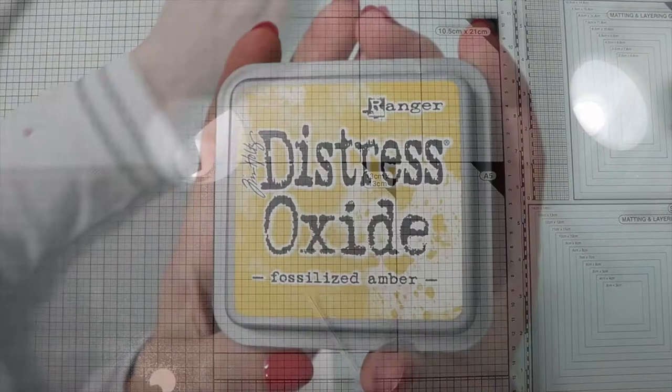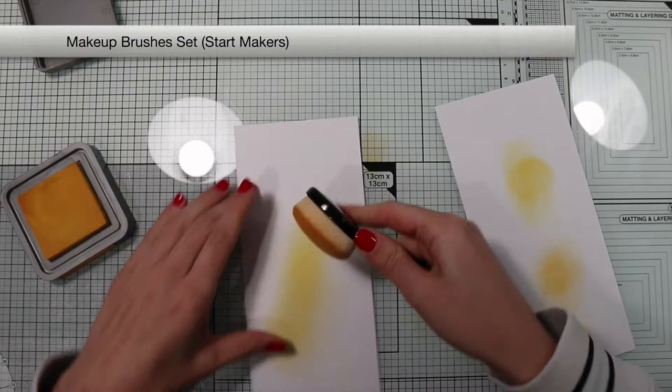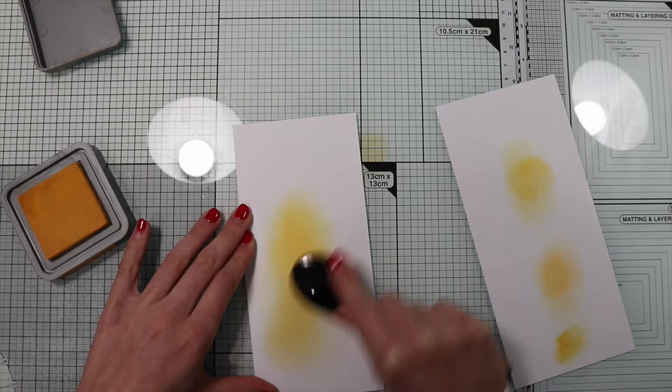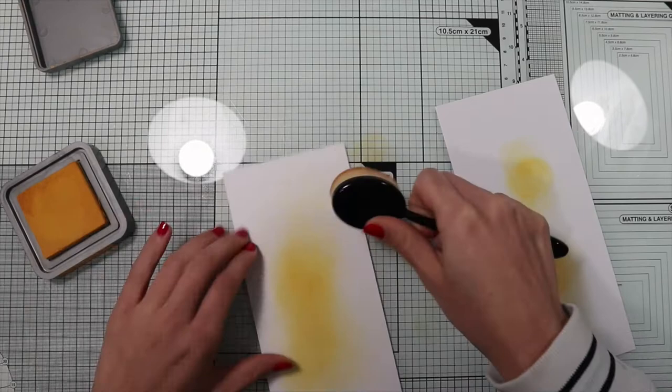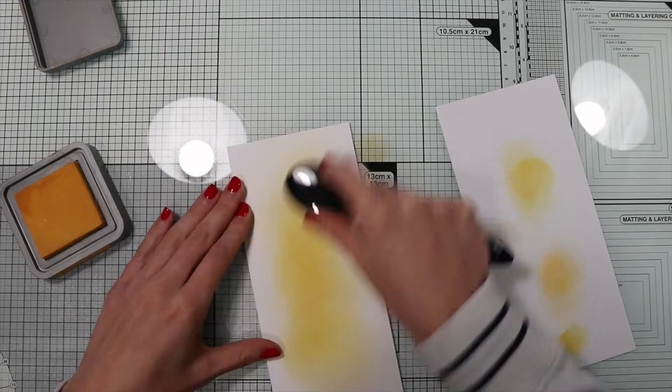A very simple coloring with a blending brush. I start from the central part of the panel where I apply more color and move towards the outside of the panel, softening the color. Then I'm going to add some interest to my background by making random stamps with the same color.